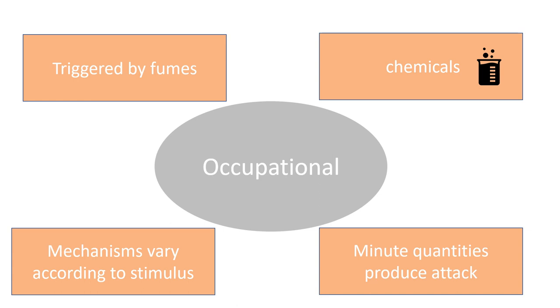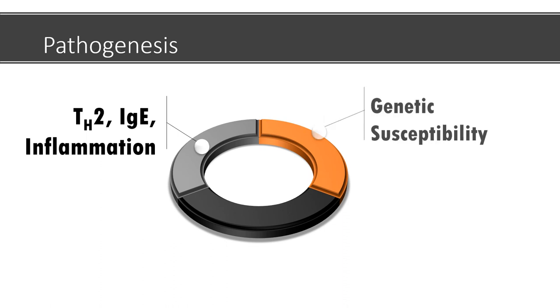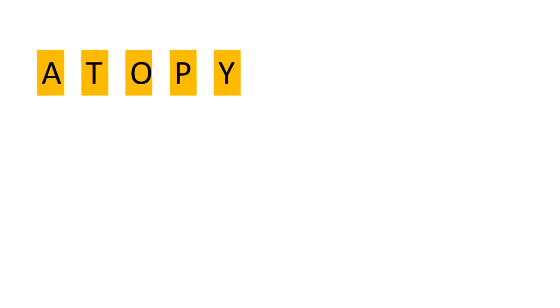Pathogenesis of bronchial asthma includes TH2 response, IgE and inflammation, genetic susceptibility, and environmental factors. Although these three factors intertwine to cause the pathogenesis, we will be discussing it separately for ease of understanding. Now atopic is the most common form of asthma, so we will explain the pathogenesis of atopic asthma.